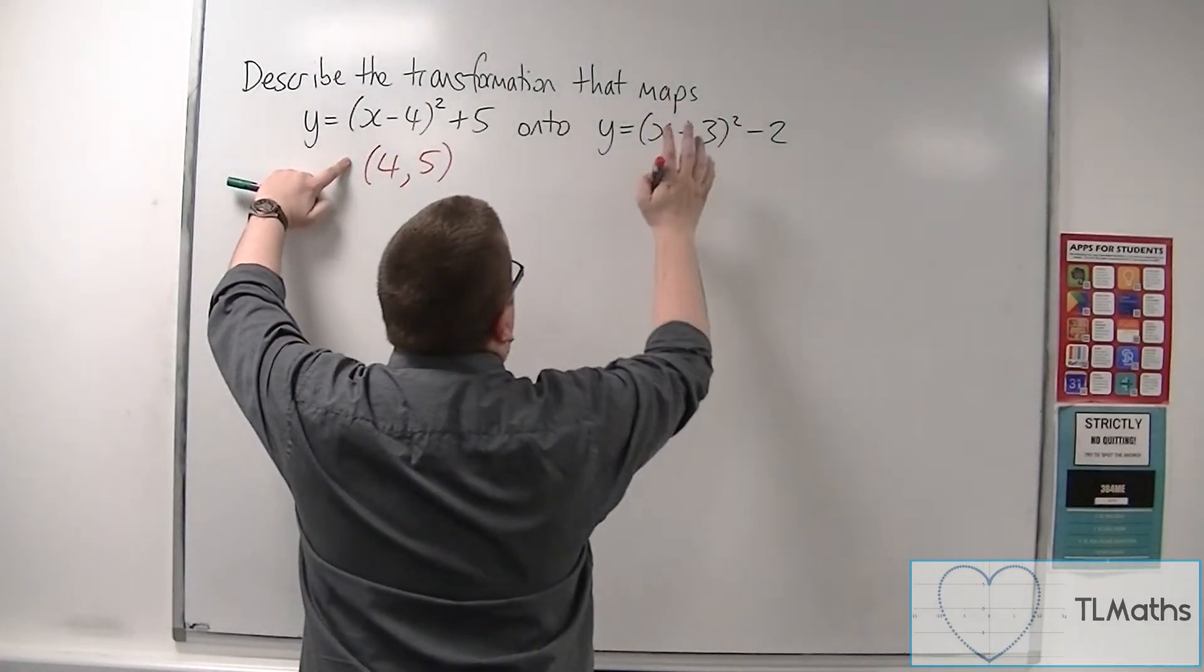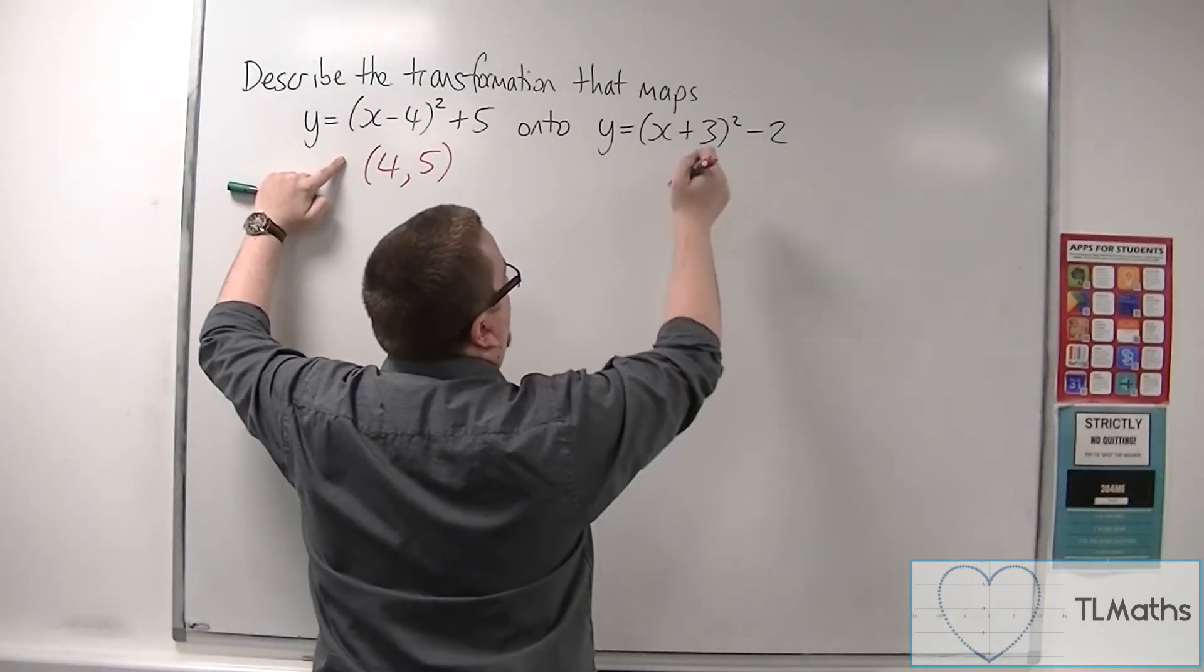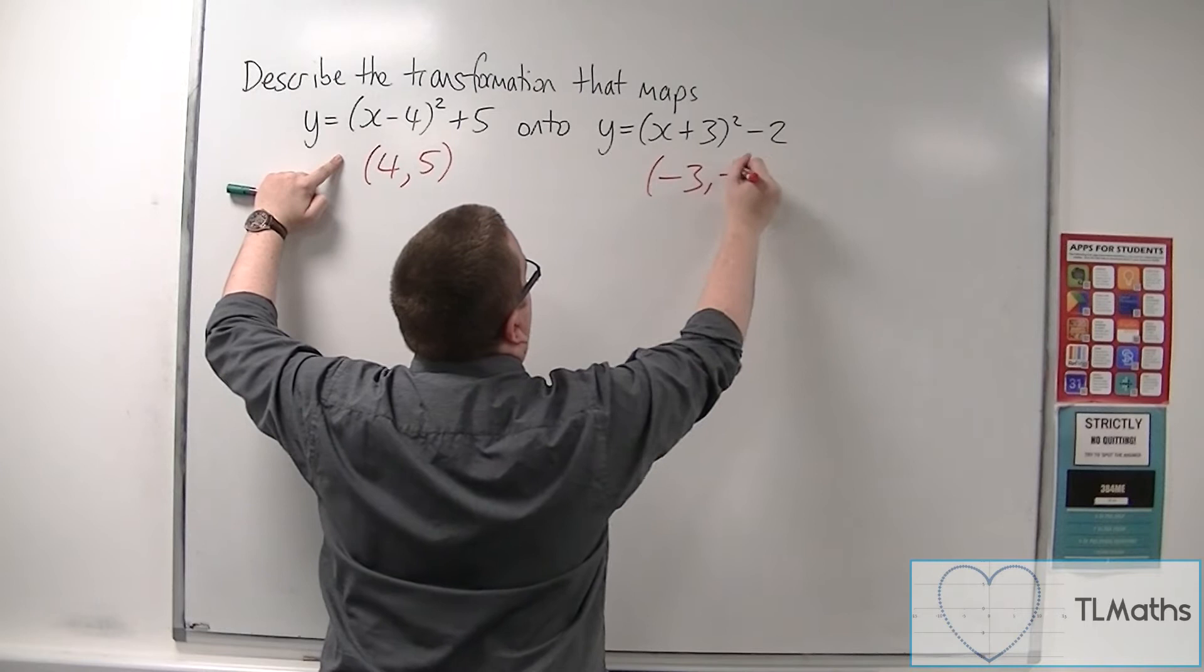And this equation we can say that the coordinates of the vertex are minus 3, minus 2.